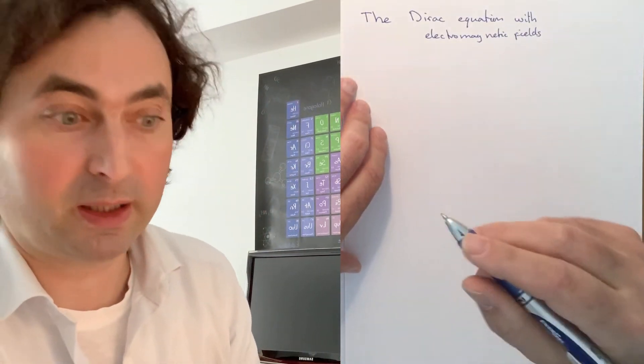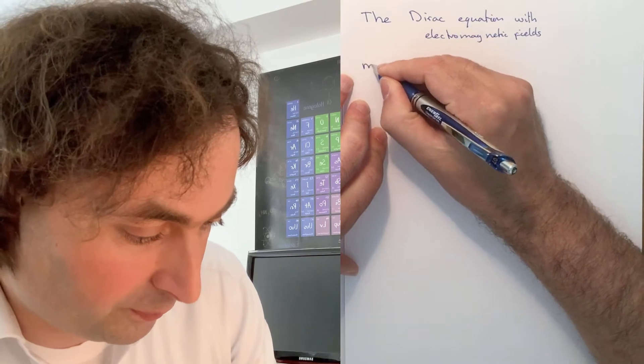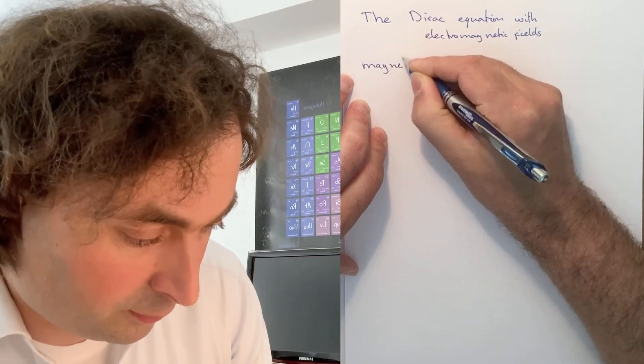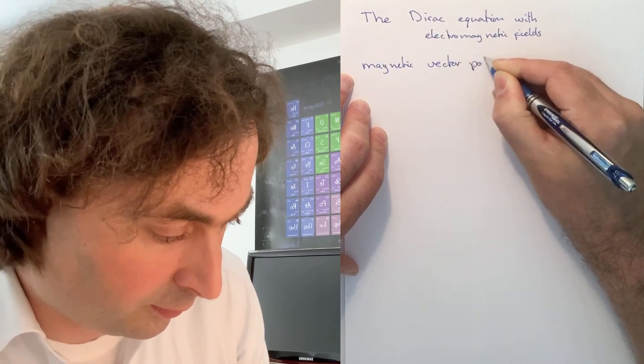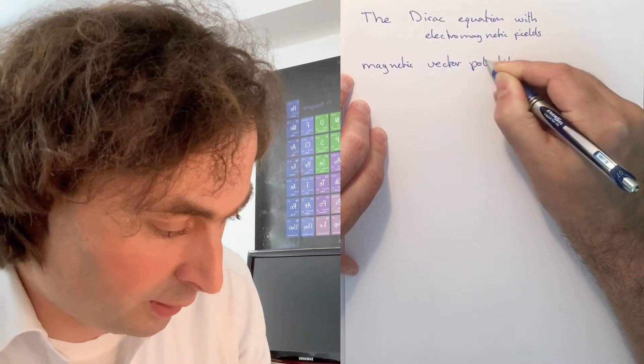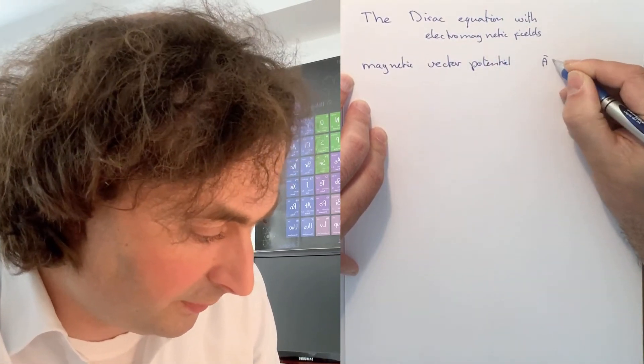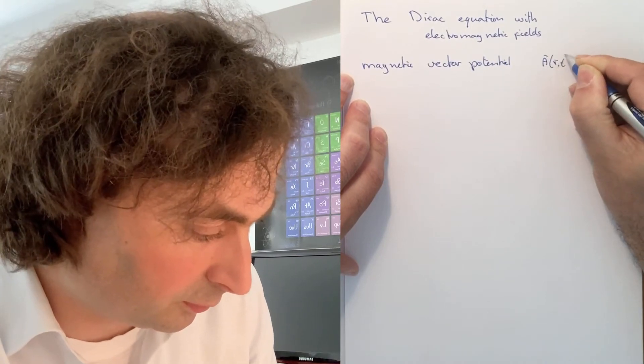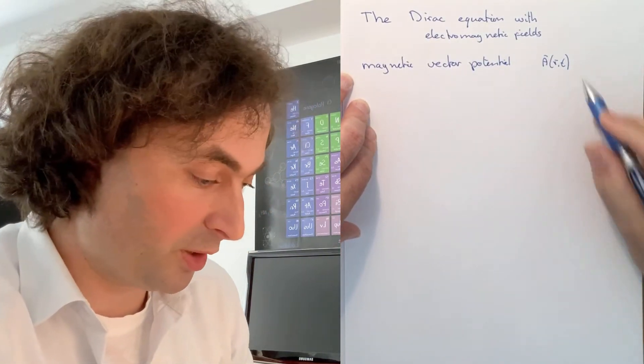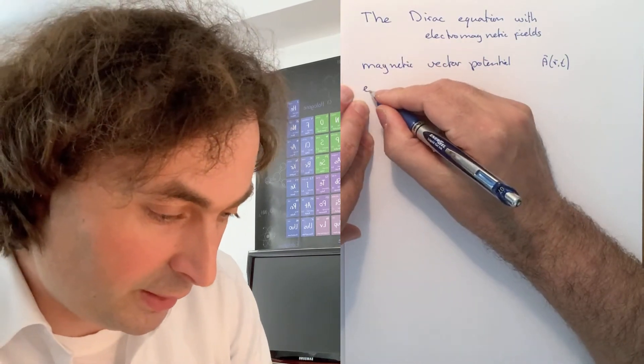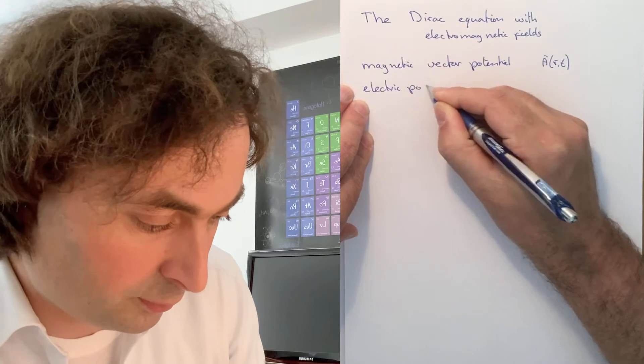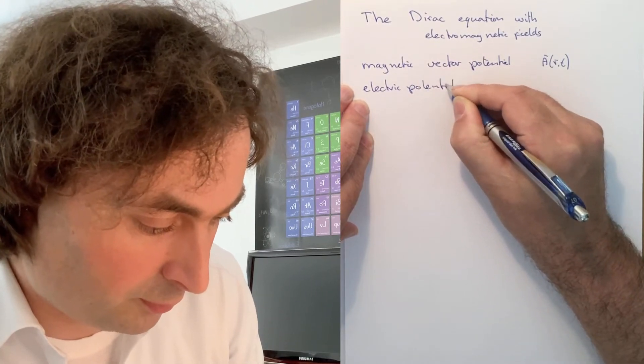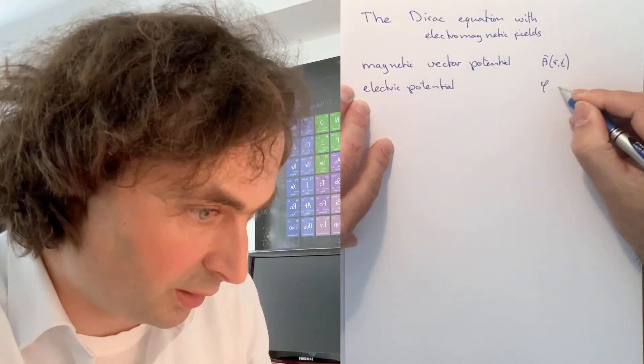For that we will use the magnetic vector potential given by A, which can be position and time dependent, and the electric potential, which is given by phi.